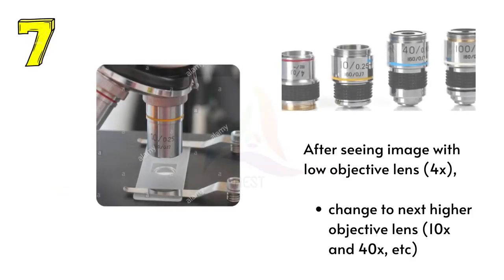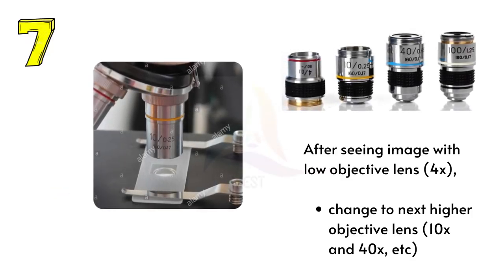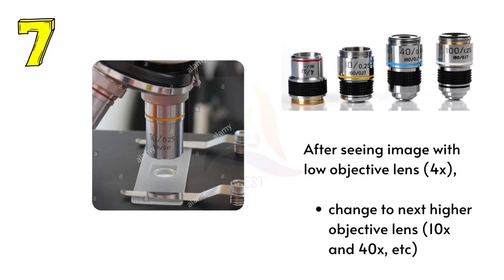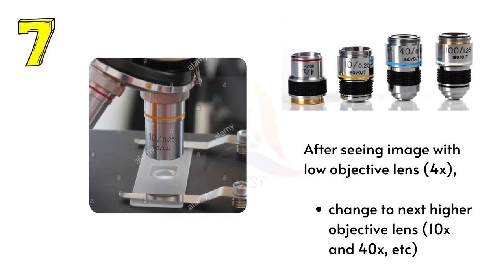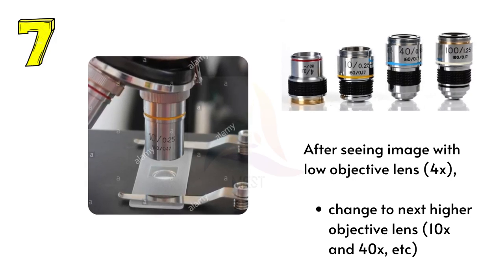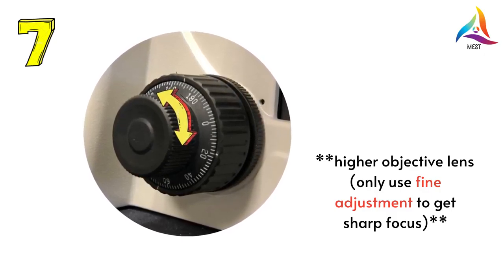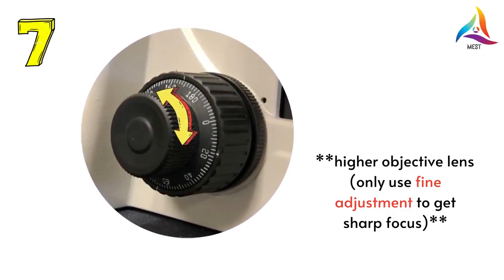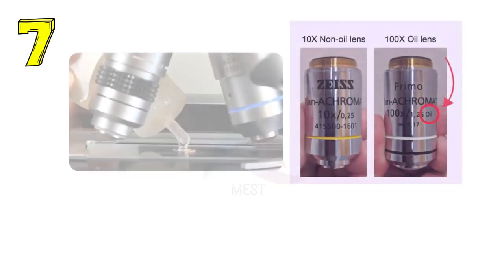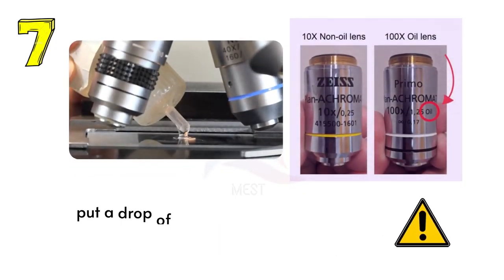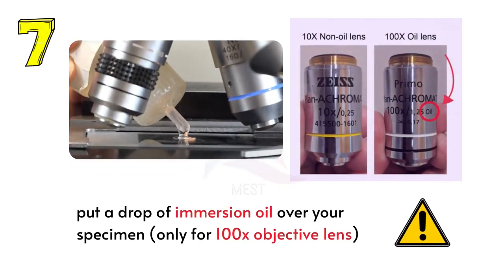After observing the image with the low objective lens, move to a higher magnifying objective lens by rotating the revolving nosepiece. Now by adjusting the fine adjustment knob, the subject can be focused sharply at this higher magnification. But here you have to be careful when you use the highest objective lens, the 100x lens. Make sure to put a drop of immersion oil over your specimen when you use the highest objective lens.